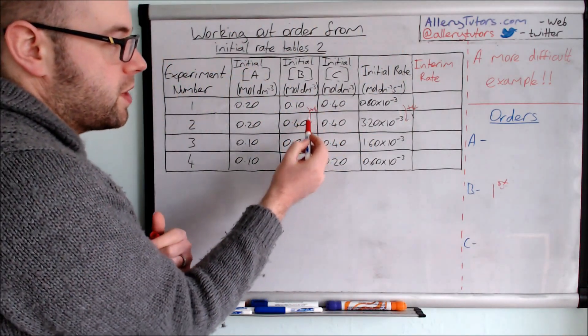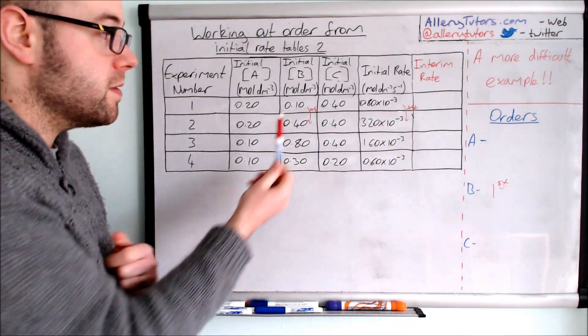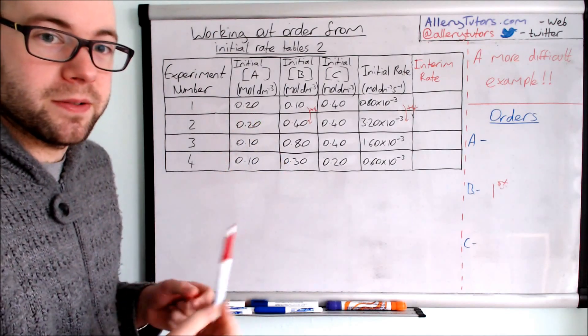B is first order because as we quadruple the concentration, the rate quadruples as well. We know that's because of B because we're not changing C and we're not changing A, so that makes it pretty straightforward.